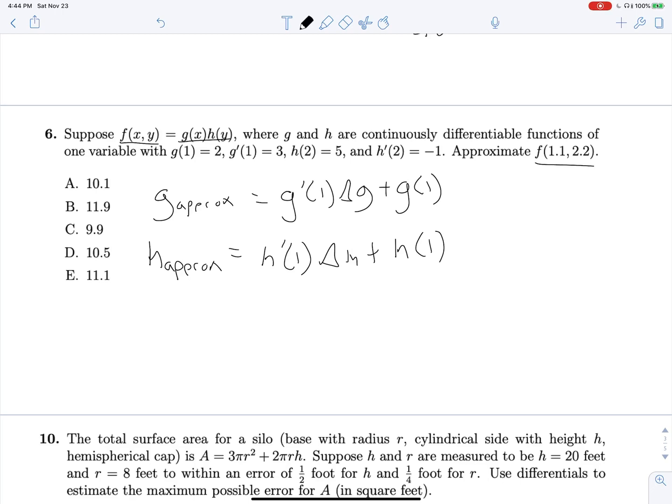And we can find these pretty quickly. Our change in g, we went from 1 to 1.1. Our change in g is 0.1 because we went up 0.1 from 1 to 1.1. So Δg is 0.1, and by that same logic, Δh is 0.2. And we're given everything else. So g_approx is going to be g'(1), which is given as 3, times Δg, which is 0.1, and we are adding g(1), which is 2. And then h_approx is going to be h'(2), which is -1, times 0.2, our Δh, plus 5.